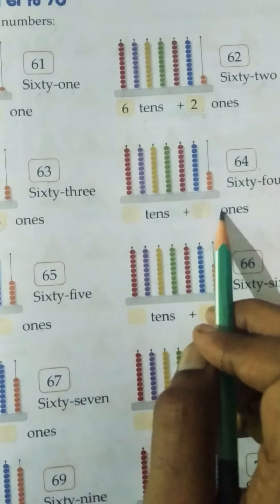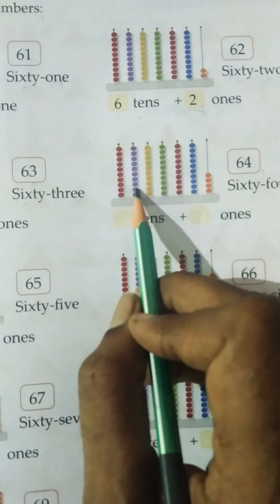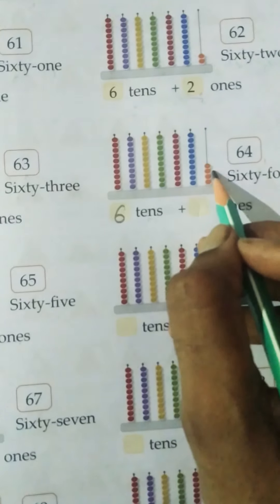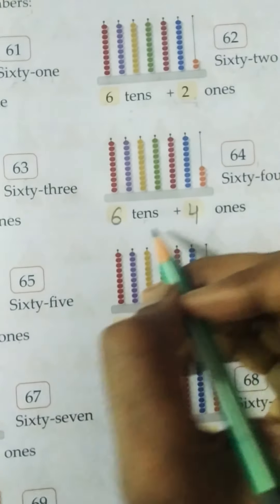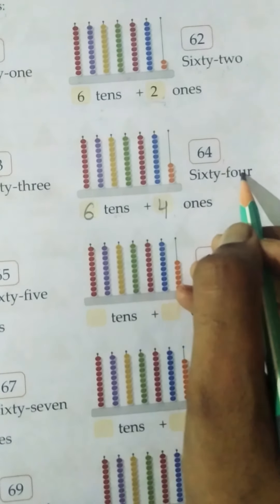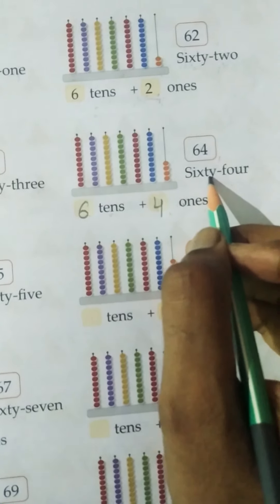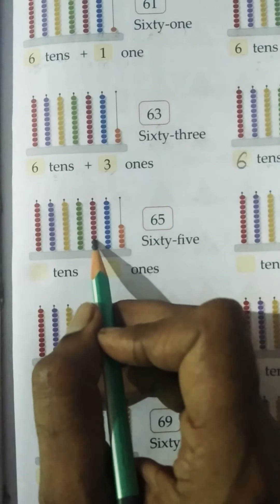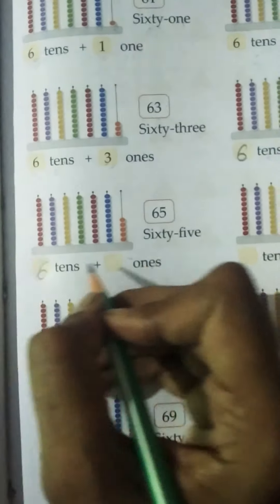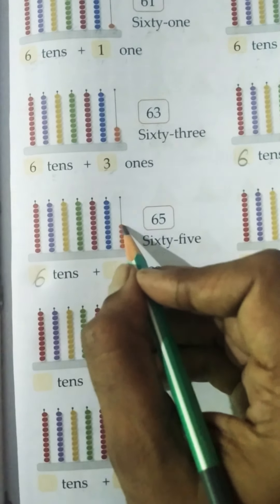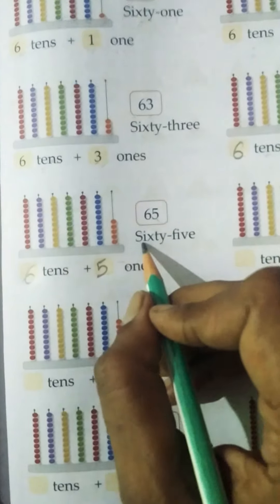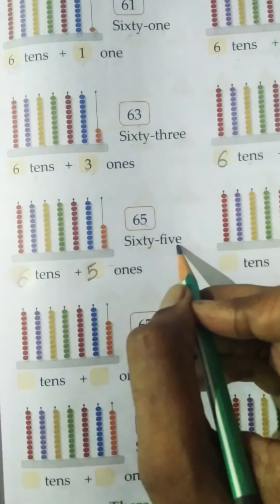Here you have to write how many tens and how many ones. Start counting: 1, 2, 3, 4, 5, 6 — 6 tens. And ones: 1, 2, 3, 4 — 4 ones. So 6 tens plus 4 ones is equal to 64. Spelling: S-I-X-T-Y (60), F-O-U-R (4). 64. Next number: 6 tens, and ones: 1, 2, 3, 4, 5 — 5 ones. 6 tens plus 5 ones is equal to 65. Spelling: S-I-X-T-Y (60), F-I-V-E (5). 65.